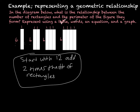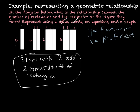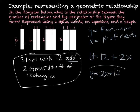The next part is to write an equation. If y equals the perimeter and x equals the number of rectangles, then the perimeter equals twelve plus two times the number of rectangles. So we write that as y equals twelve plus two x, or y equals two x plus twelve. That is your final answer.